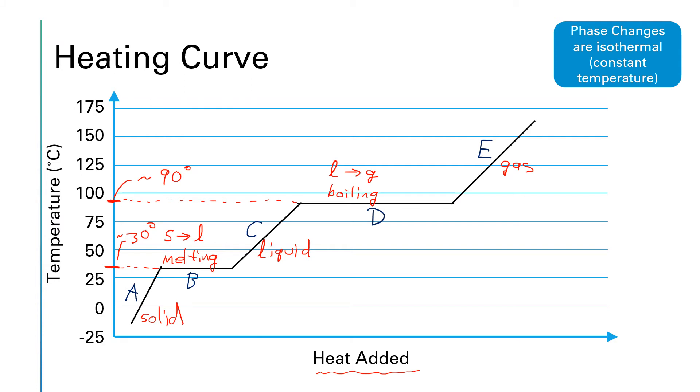I might ask something like which one of these line segments represents the state of matter in which the particles are farthest apart from one another. That would be answer E. I like questions like that because it makes you combine what you know about heating curves with what you know about the particle nature of the states of matter.